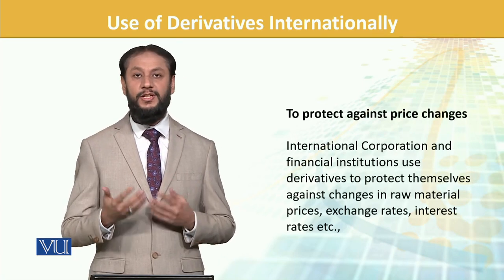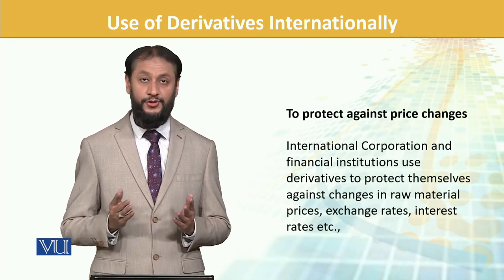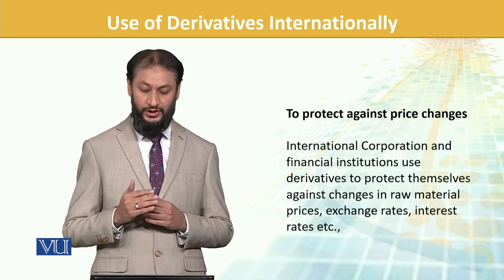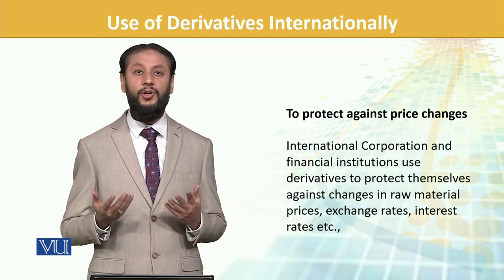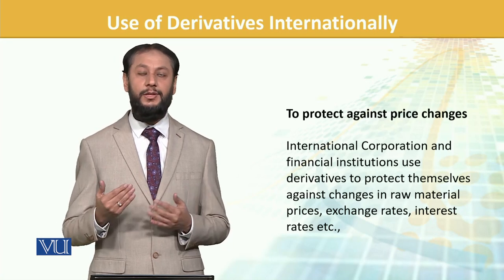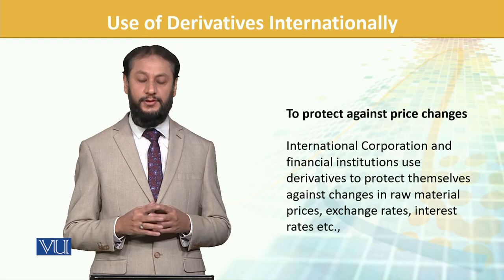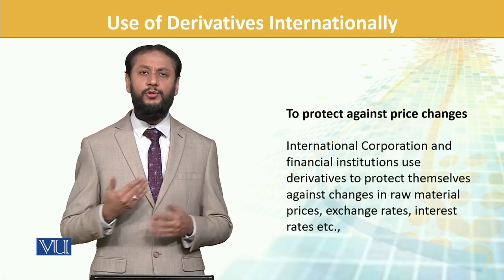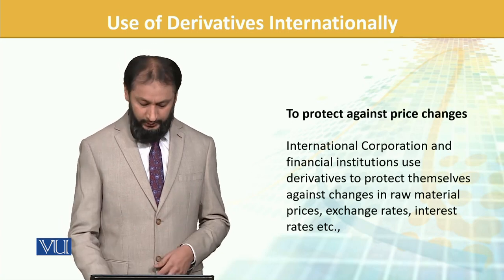To protect against price changes, derivatives are used to save against price variations. International corporations and financial institutions use derivatives to protect themselves from changes in value of raw materials. For example, oil is a raw material for many countries, and to hedge oil price risk, multiple contracts are being done. Derivatives are also done on interest rates — it's a long list of underlyings on which derivatives work.